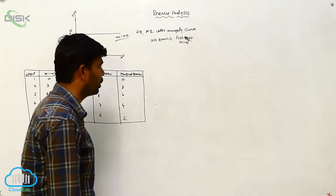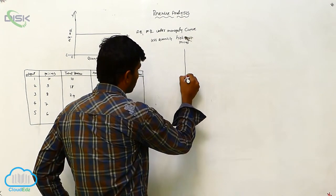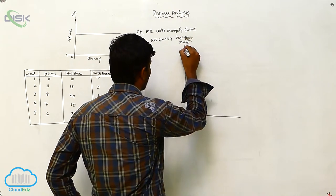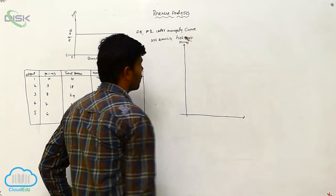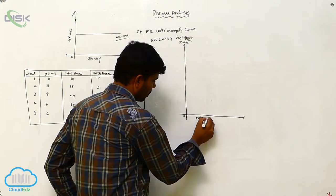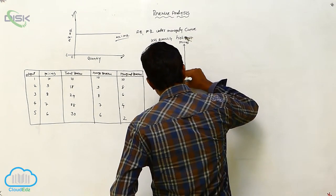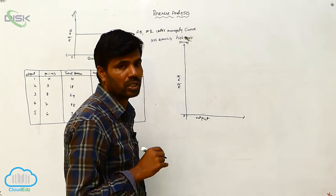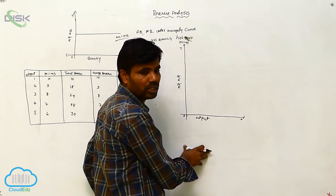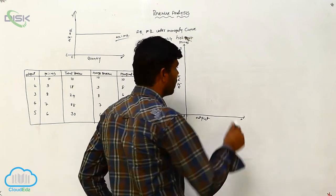Now we are going to show the curve system. Y is equal to output. Next is A, R minus M, R. What is the position going on? On the O-X axis we are going to consider output; on the O-Y axis we are going to consider A, R minus M, R curves.